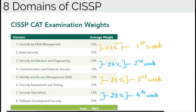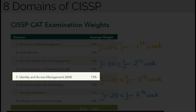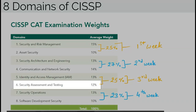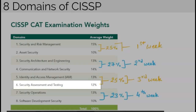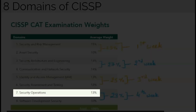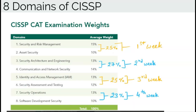Domain 4 is Communication and Network Security with a weight of 14%. Domain 5 is Identity and Access Management with a weight of 13%. Domain 6 is Security Assessment and Testing with a weight of 12%. Domain 7 is Security Operations with a weight of 13%.